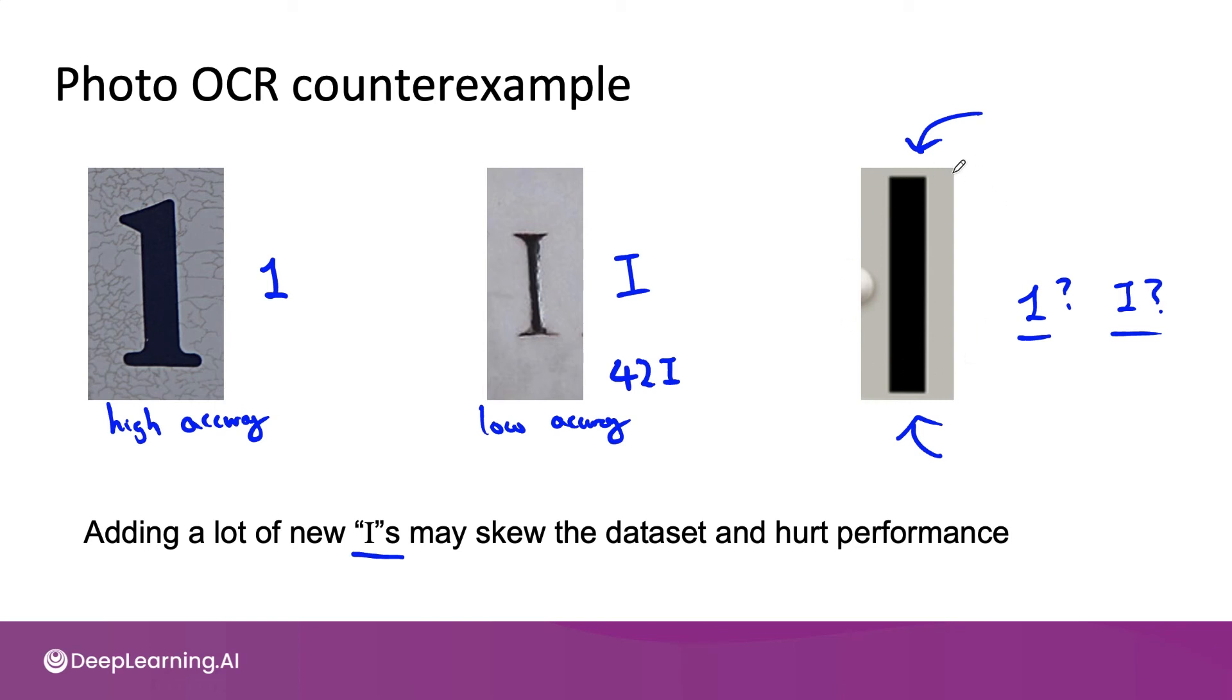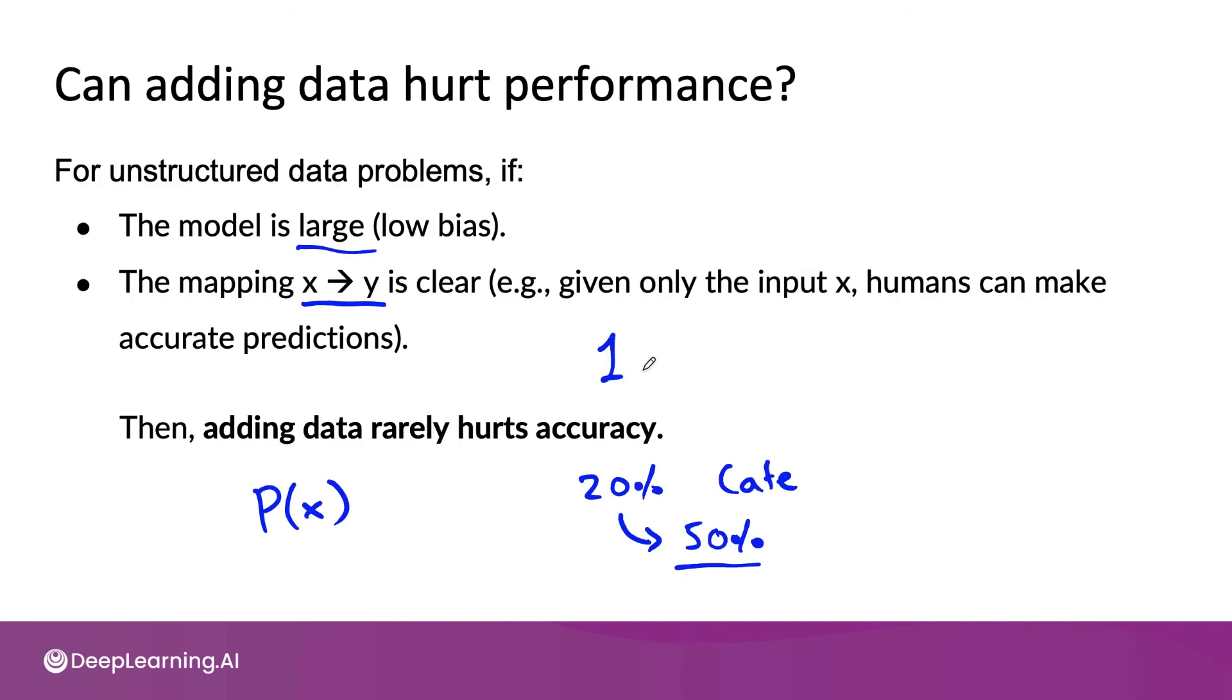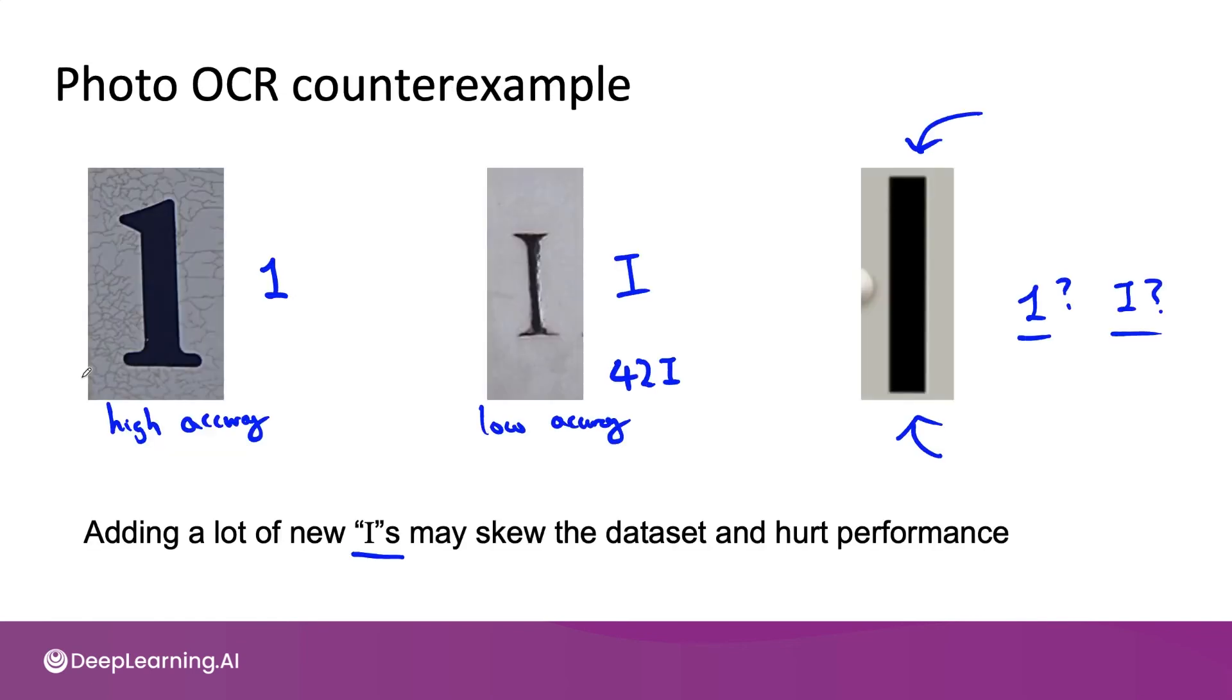So this is one rare example where adding more data could hurt performance. And this example of one versus I is one that contradicts the second bullet, because for some images, the mapping from x to y is not clear. In particular, given only an image like this on the right, even a human can't really tell what this is.